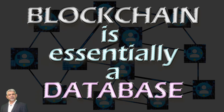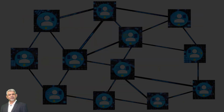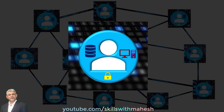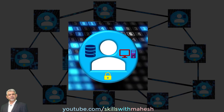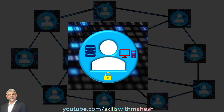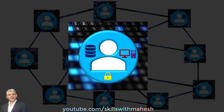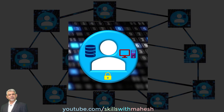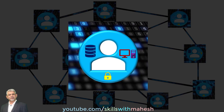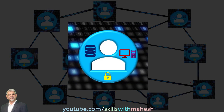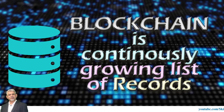A distributed database enables participants to verify and authenticate users' transactions and add those transactions to their own copy of the database. Once this is done, the copy of the database with all other participants gets updated automatically. So blocks of transactions containing something like 10 megabytes of data get added by the quickest participant. In simple words, Blockchain is a continuously growing list of records called blocks.